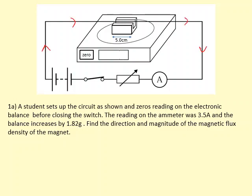According to this question, the current is 3.5 amps. The reason it's going in that direction is because it's going from positive to negative. This causes the reading on the balance to go to 1.82 grams. What we need to find is the direction and magnitude of the magnetic flux density of the magnet. So firstly, why is there a force on the balance? Why is something pushing down the balance?